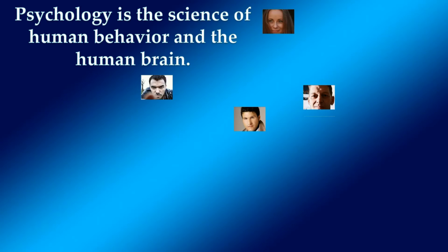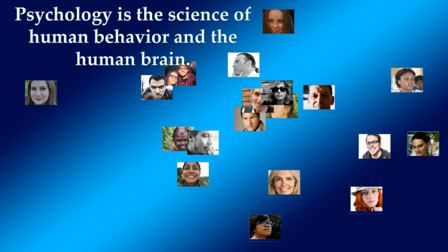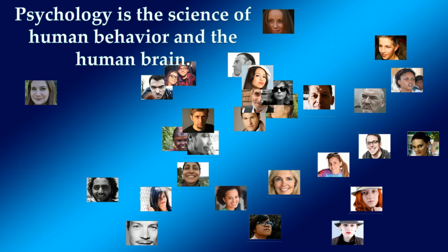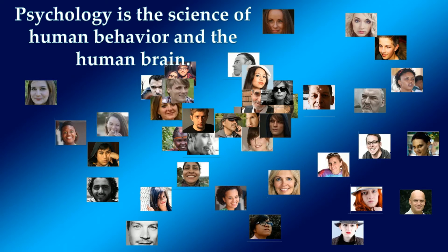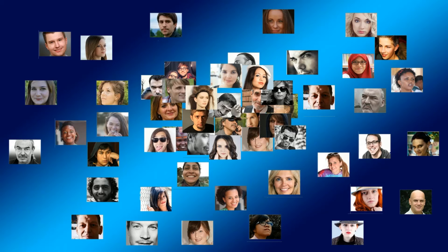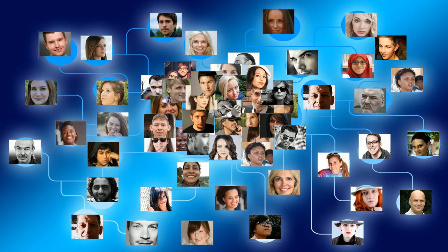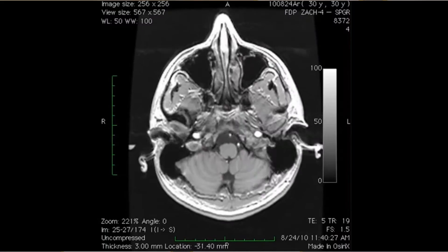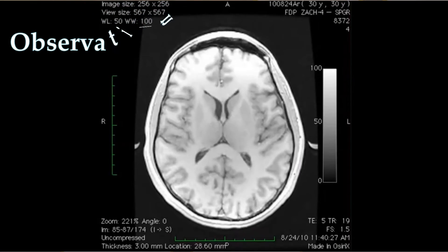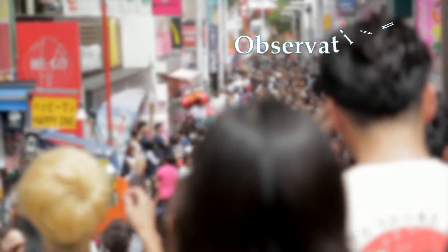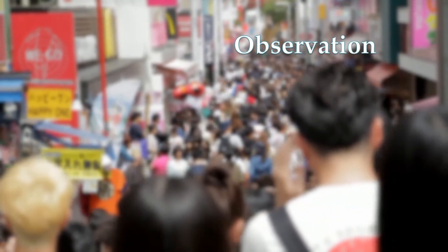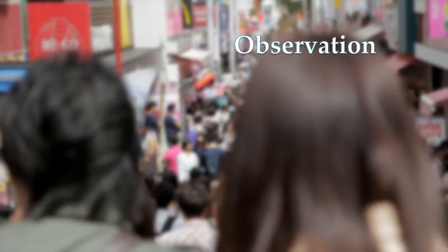Psychology is a science of human behavior and the human brain. Psychologists might observe the human brain with an MRI scan, or they might observe people and their behaviors. They might do this in a natural environment like on the street, or they might bring people into the lab and observe them there.